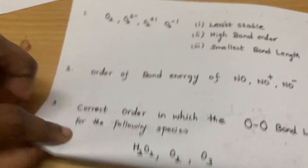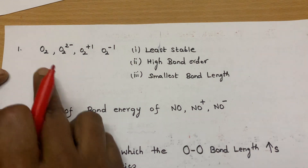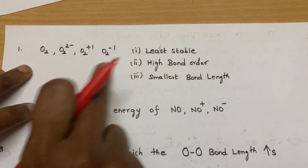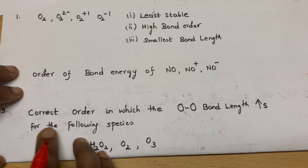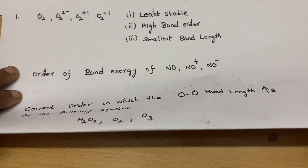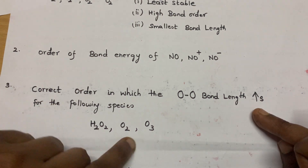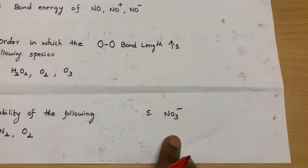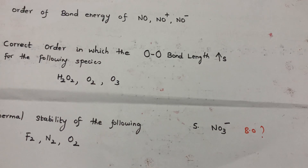I have a set of practice questions for you. Please try: which is the least stable among the given species, which has the highest bond order, which has the smallest bond length, the order of bond energy, the order in which oxygen-oxygen bond length increases for the given species, the thermal stability of the following, and for NO3⁻ what is the bond order? I will share the answers in the next video. Thank you.